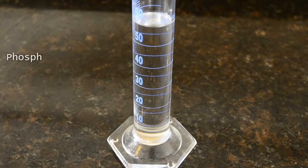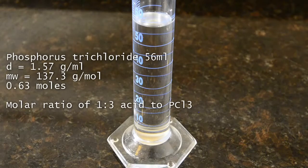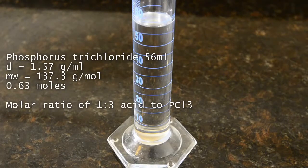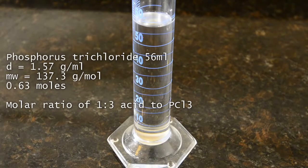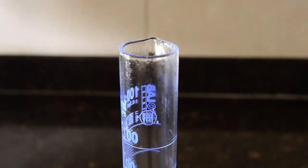Next, measure out 56 ml of liquid phosphorus trichloride. This is very toxic so do take great care with it and use only with ventilation present. As you can see it fumes in air so try to work quickly.